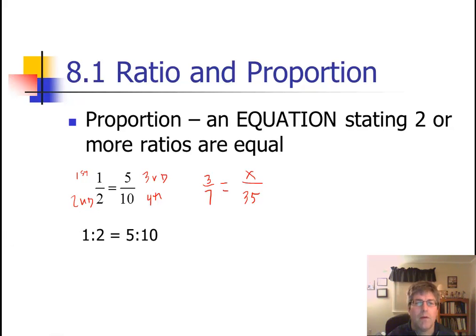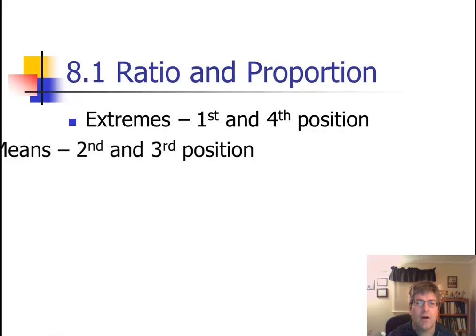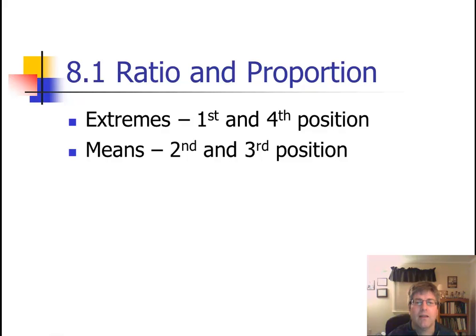And we can also see a proportion 1 is to 2 as 5 is to 10 or a is to b as c is to d. And this is the slide where we see that the extremes are the first and fourth position, generally the high and the low, and the means are in the second and third position.